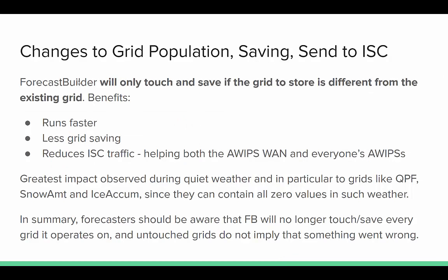With grid population saving and sending, one of the changes in 7.3 was to help with ISC traffic. As you know, for those that utilize the cron, there are a lot of elements being created and sent over the AWIPS WAN, which puts a lot of load on the WAN itself as well as everybody's AWIPS edX servers. So what we've done is now only touch and save a grid if it's going to be different from the existing grid. The greatest impact will be during quiet weather, because grids like QPF, snow, and ice accumulation would probably be zero — so the new grid that would get populated would be zero as well, reducing AWIPS WAN traffic, ISC, and AWIPS edX load.